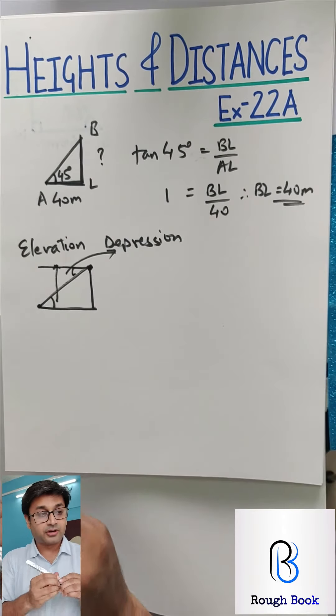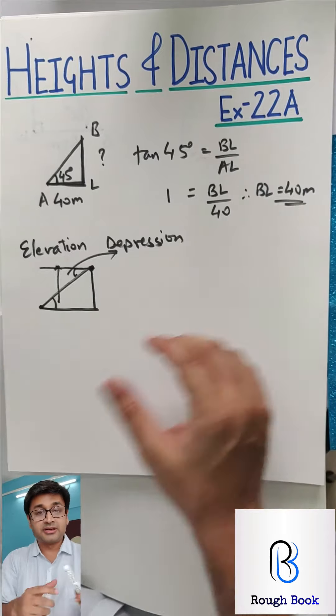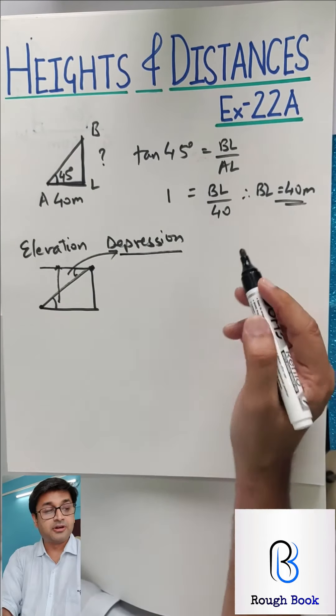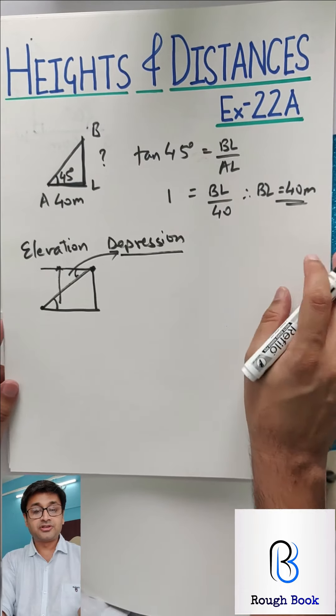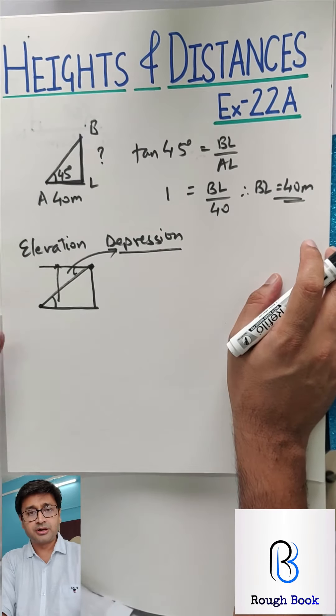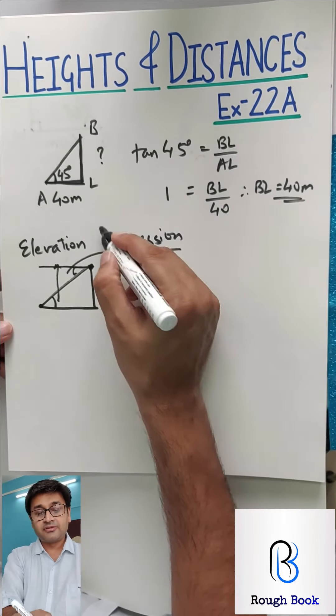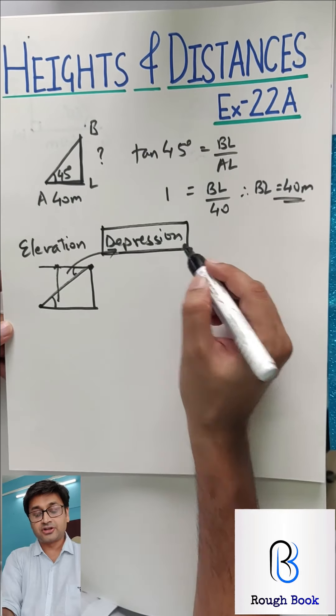This is not the angle of depression. Don't get confused. Angle of depression is with the horizon. Horizon is this line which we create, the imaginary line. That is called the angle of depression. Very, very important. Many times people don't understand this and they mess up the angle of depression.